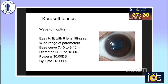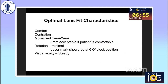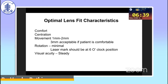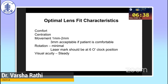Higher powers and higher cylinders can be corrected with Kerasoft lenses. The optimal lens fit characteristics with these lenses is similar to any other soft contact lens — we look for comfort, centration, and movement of one to two millimeters, though with these lenses even up to three millimeters of movement is acceptable if the patient is comfortable and has steady vision.